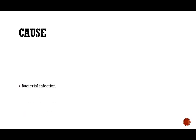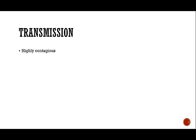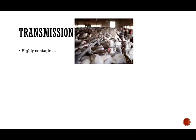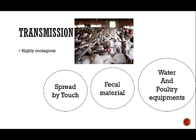The disease is caused by a bacteria called Salmonella pullorum and it is characterized by heavy mortality. Regarding transmission, it is widespread and heavily contagious. It is spread through droppings and contaminated fecal material, along with contaminated water and poultry equipment.